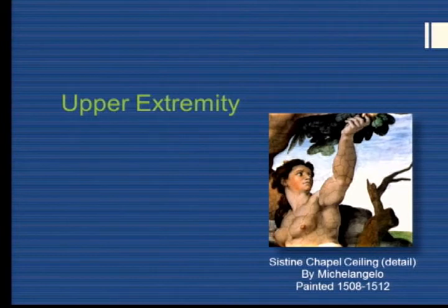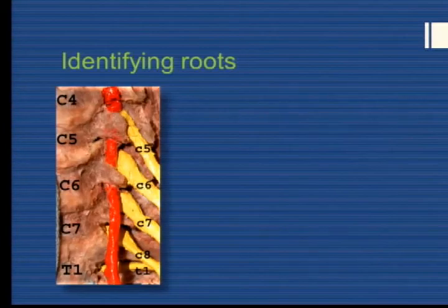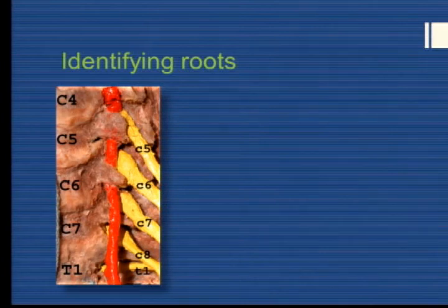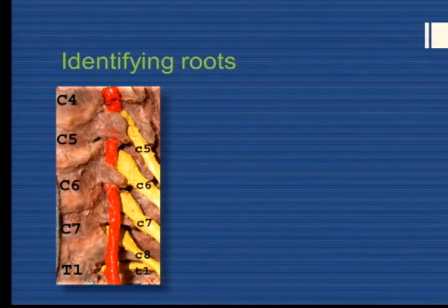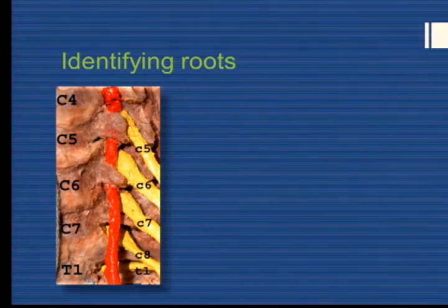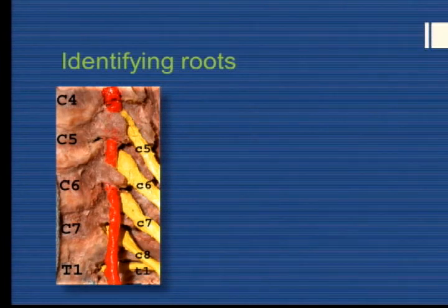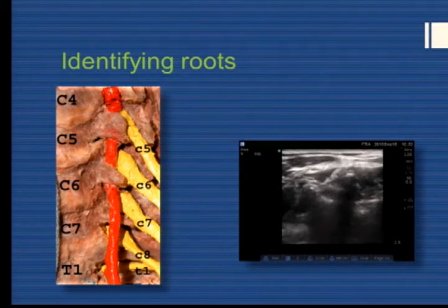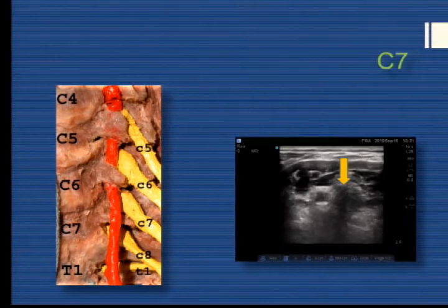Moving to the upper extremity, identifying the roots: cervical transverse processes have an anterior and posterior process. From the anterior process the anterior scalene inserts, and from the posterior both the middle and posterior scalene. The C6 tubercle has been considered prominent and has its own name, but comparing it, it's no more prominent than C5 — in fact C5 could be argued to be bigger. The fact that C7 usually lacks an anterior tubercle may make C6 palpation seem more prominent. The lack of an anterior tubercle at C7 can be used to identify your level: if you have two shadows and a nerve at one level, and then only one shadow at the next, that most likely is the root of C7.